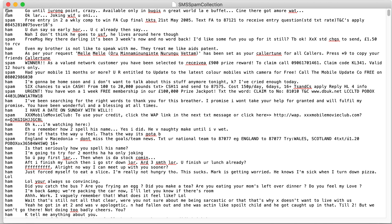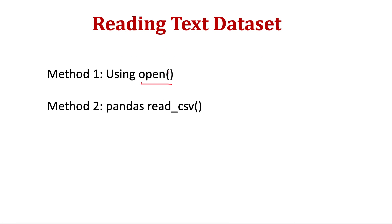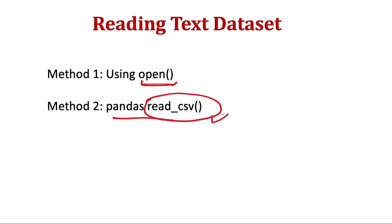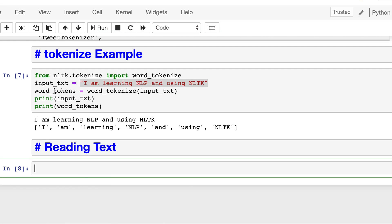Each message has one spam or ham label, then a tab separator, then the actual SMS message. We will manually read the characters and, using the delimiters, add the data to a pandas DataFrame. The second method is the easier way, where we directly use pandas' read_csv function, which handles tab-separated data very easily.